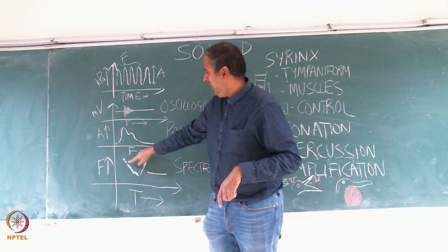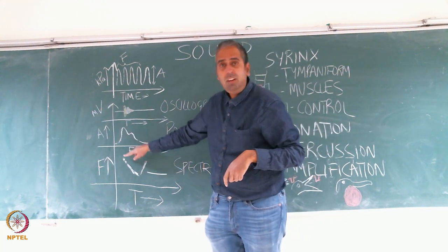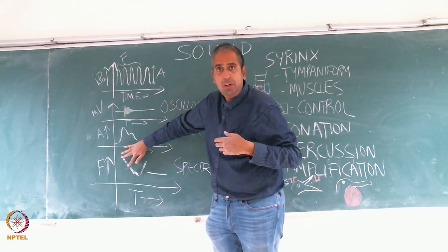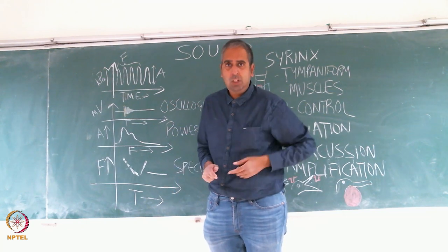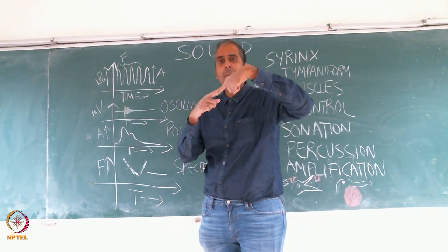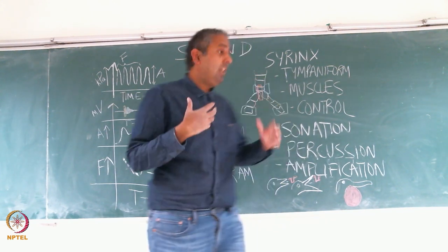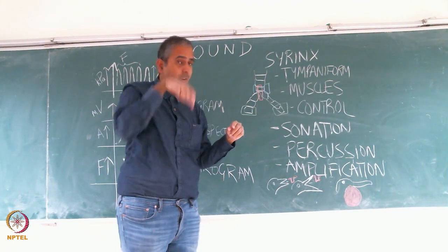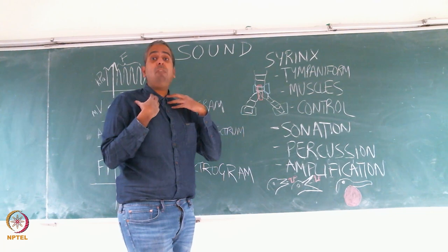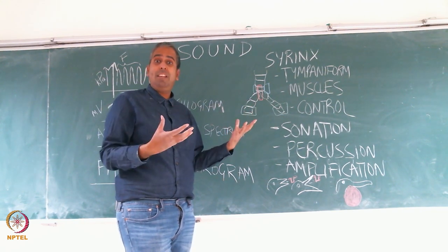Sometimes the same note can be produced half by one syrinx and half by the other. Cardinals have a note that looks smooth, but actually half of it is produced by one syrinx and half by the other — if you block the left syrinx, one part disappears, and vice versa. One syrinx controls one half of the note and the other syrinx seamlessly integrates to produce what looks like a smooth note, but is actually a very complex note produced by both syringes. That can only arise with independent control — a feature of bird syringes that almost no other organism possesses. We have one vocal cord; most other animals also have one vocal cord.